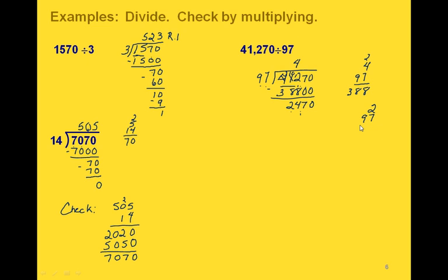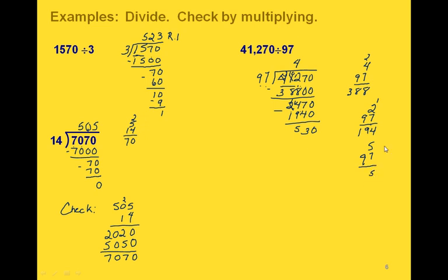Since 97 is almost 100, we could guess that 97 would go into 247 about two times. It's better to underestimate than overestimate here. So 2 times 7 is 14, carry the 1, and 9 times 2 is 18 plus 1 is 19. Now if we subtract these two, we have to borrow: 14 minus 9 is 5 and 1 minus 1 is 0. So one more time, we're comparing 97 to 530 — we can guess it goes in about five times.